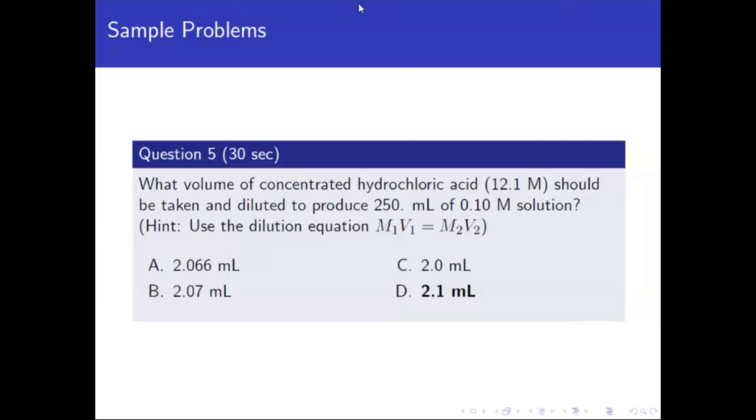So here, the trick is actually the number of significant figures. This is very important because 250 mL, if you notice, there's a dot there, which means three significant figures. Zero is included in our significant figure.